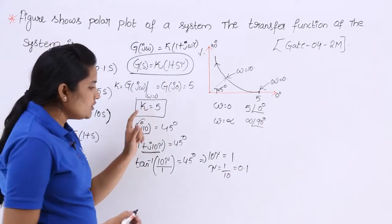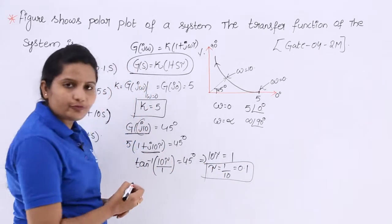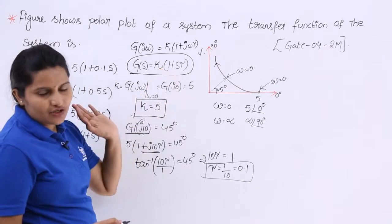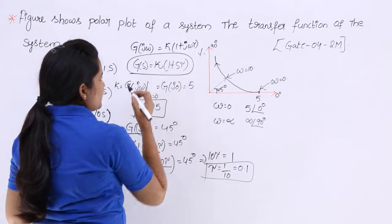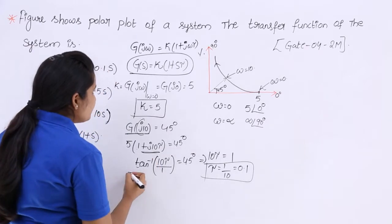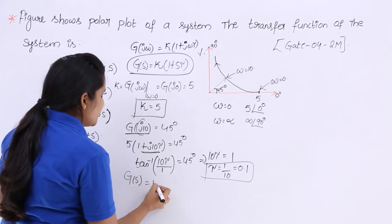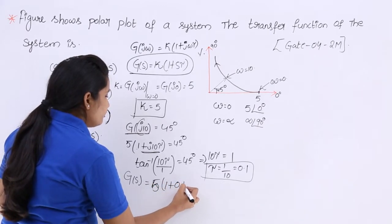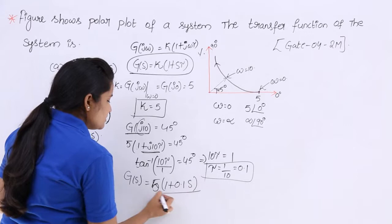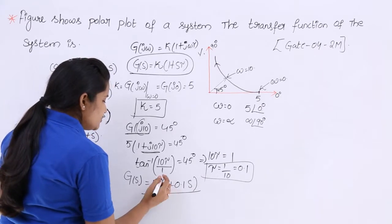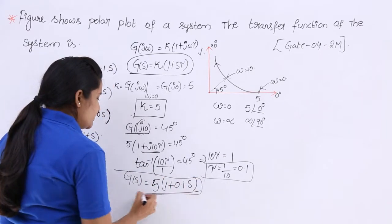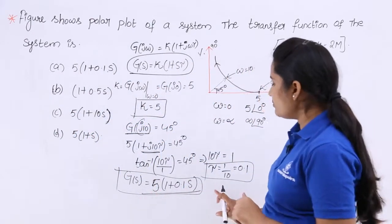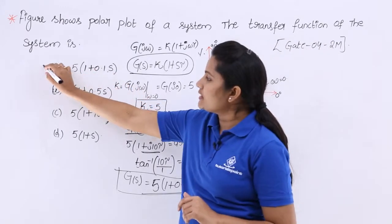We have found k = 5 and τ = 0.1. Substituting into the standard transfer function: G(s) = 5 × (1 + 0.1s). So 5(1 + 0.1s) is the answer for this problem.